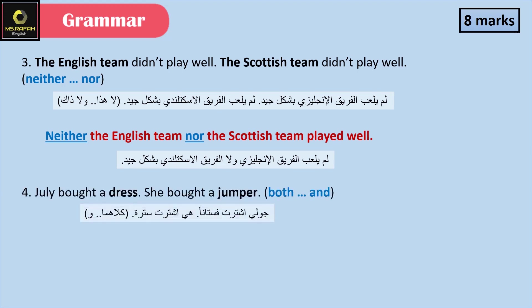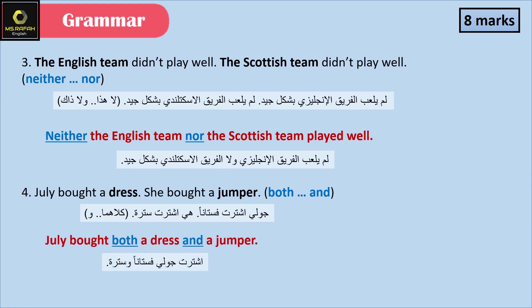'Julie bought a dress. She bought a jumper.' We're going to use 'both/and.' Answer: Julie bought both a dress and a jumper.